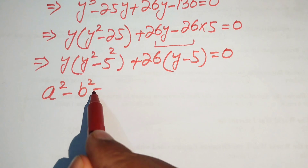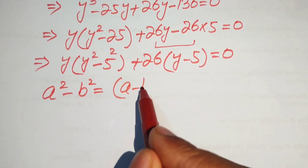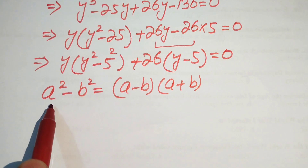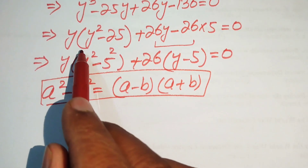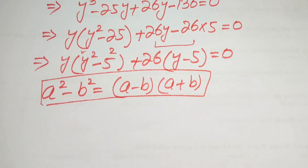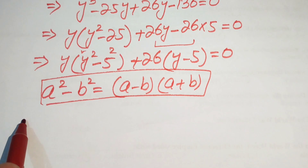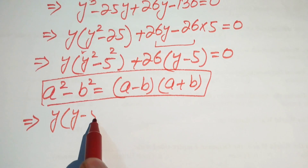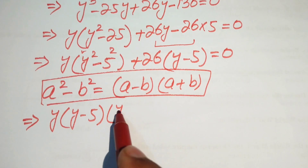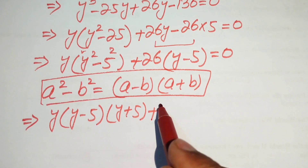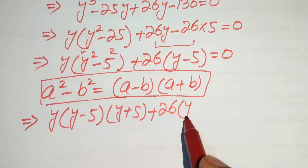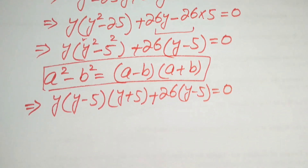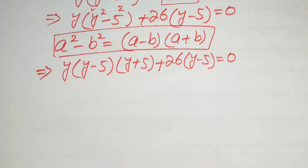We apply the difference of squares identity: a squared minus b squared equals (a minus b)(a plus b). Applying this to (y squared minus 25), we write it as (y minus 5)(y plus 5). The equation becomes y(y minus 5)(y plus 5) plus 26(y minus 5) equals zero.